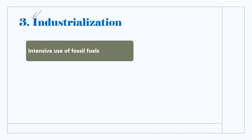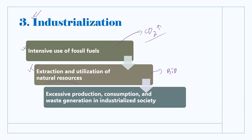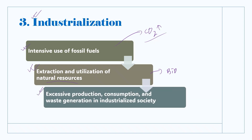The intensive use of fossil fuels in industrial processes releases greenhouse gases, contributing to climate change and global warming. Industrial activities generate various types of pollution, including air, water, and soil pollution, affecting human health and ecosystems. The extraction and utilization of natural resources for industrial purposes often lead to habitat destruction and loss of biodiversity. The increasing demand for goods and products in industrialized societies results in excessive production, consumption, and waste generation.